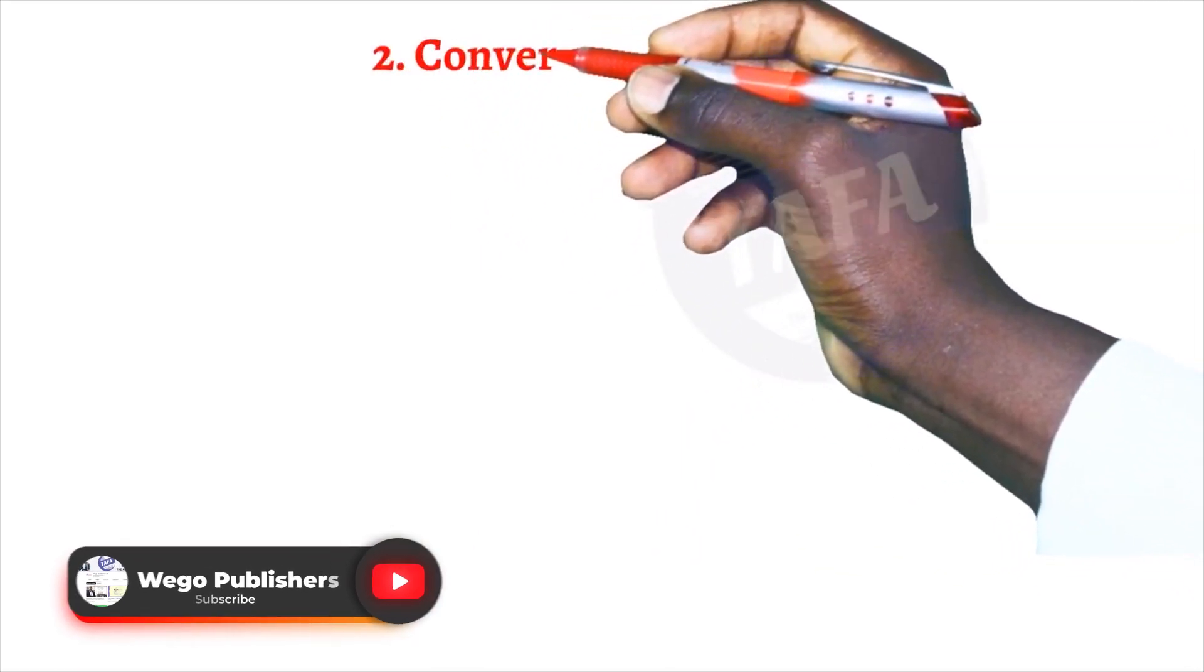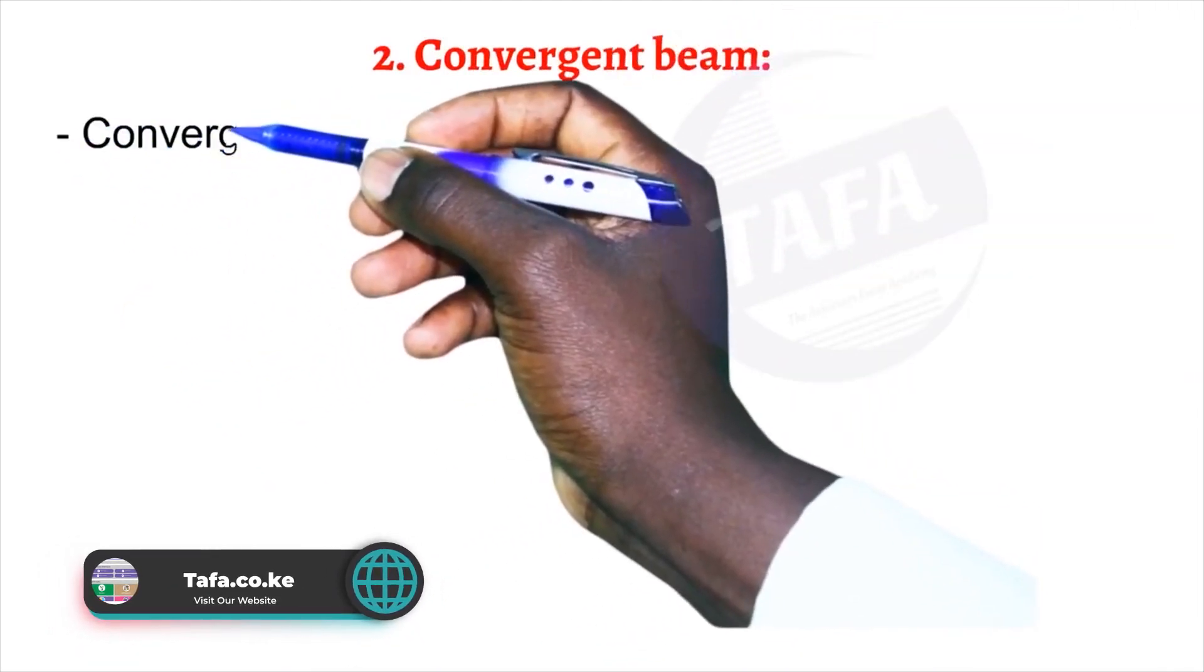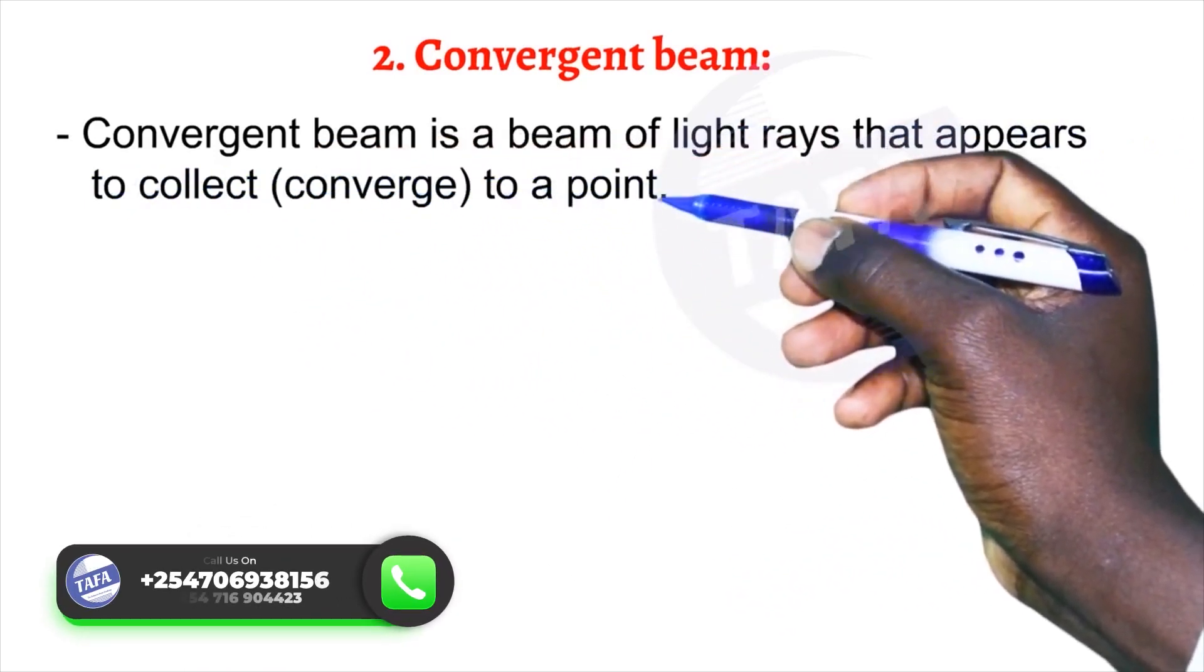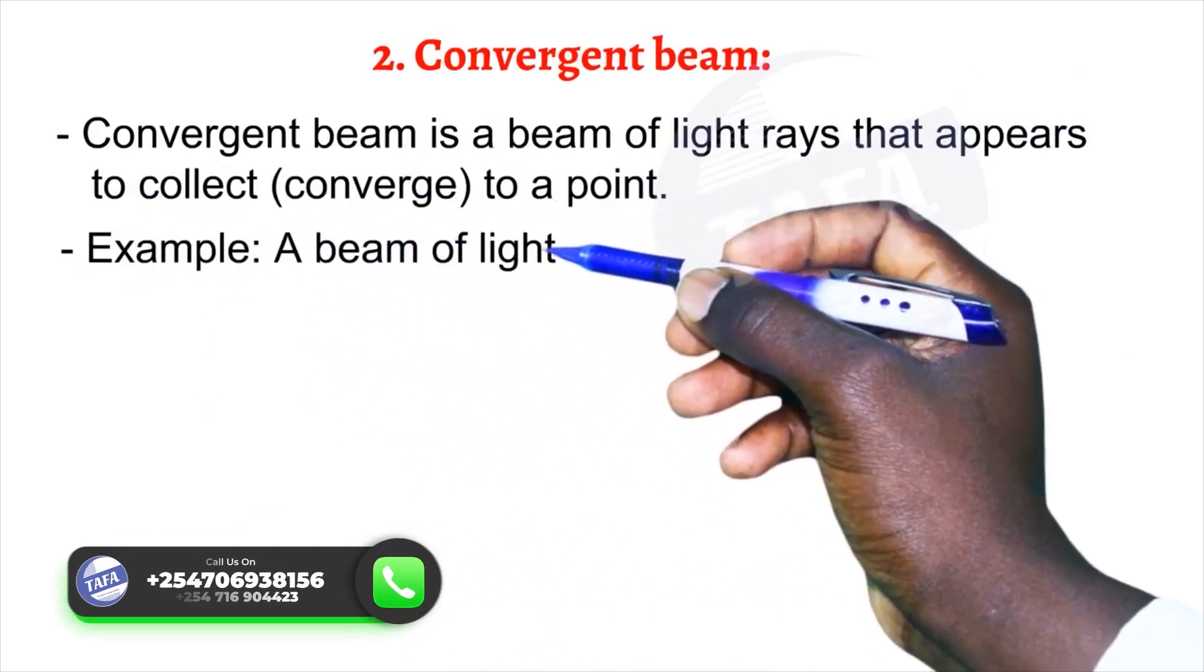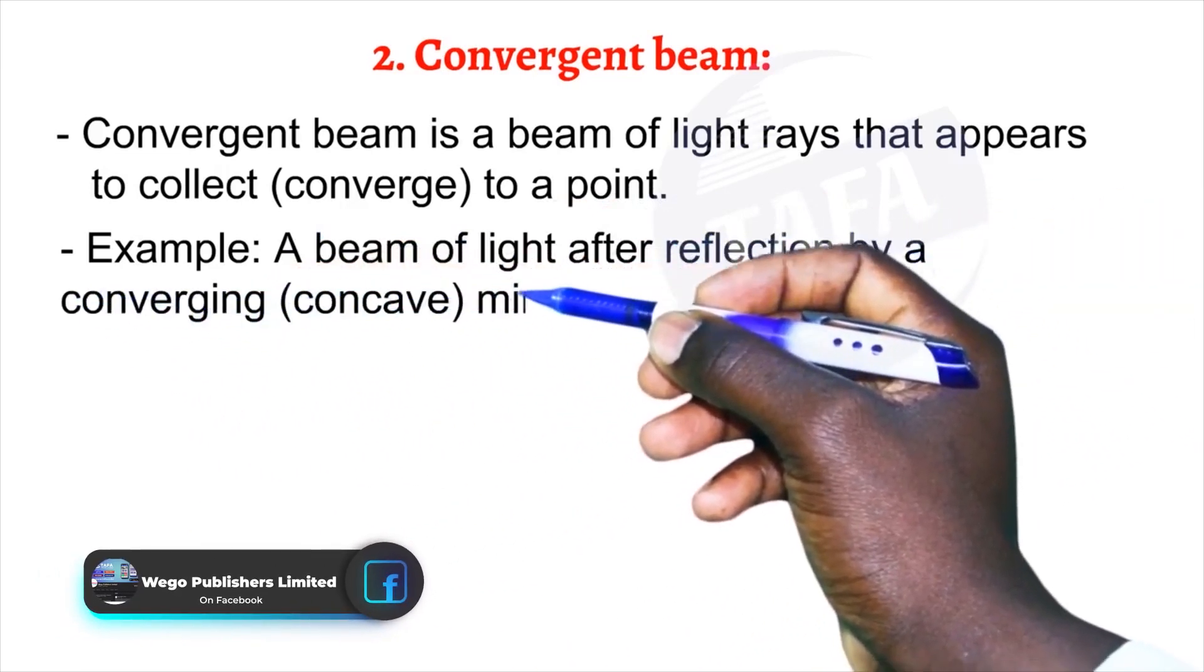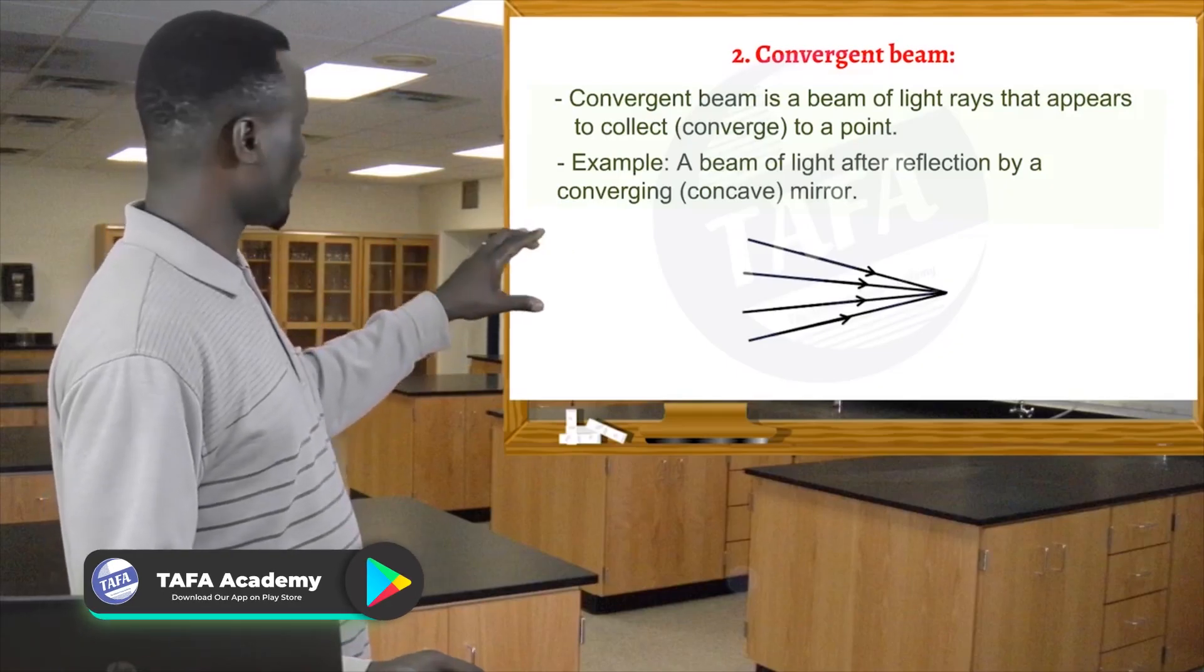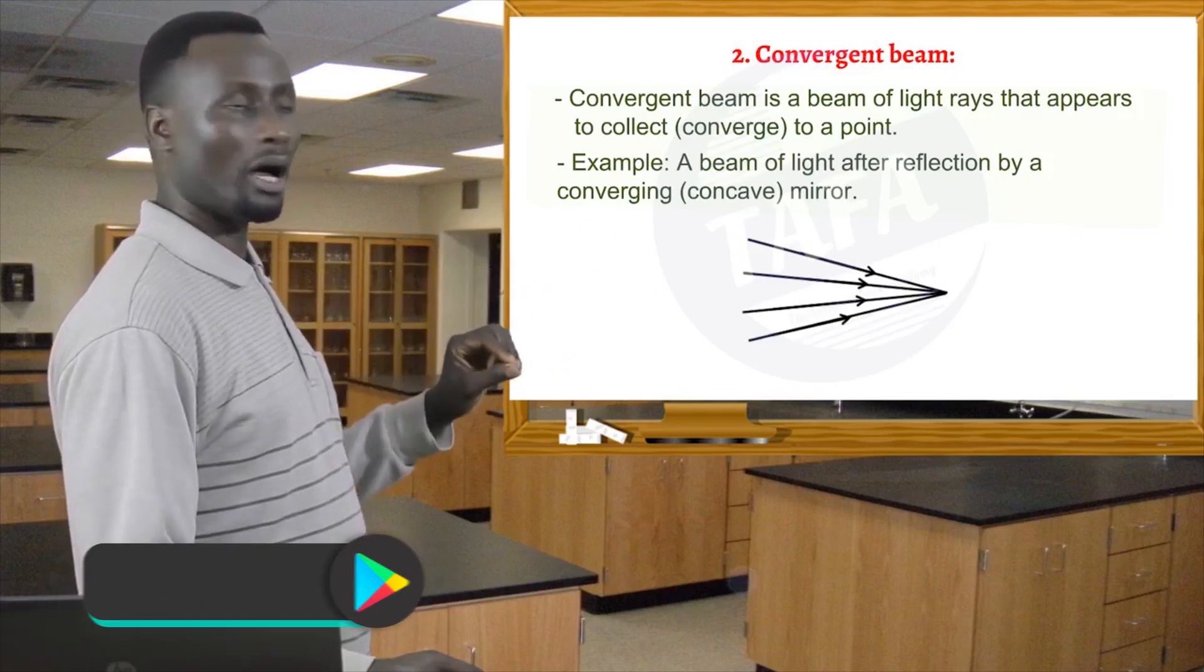Secondly, convergent beam. A convergent beam is a beam of light rays that appear to collect or converge to a point. Example: a beam of light after reflection by a converging or concave mirror. This diagram shows a group of rays collecting or converging at a point.